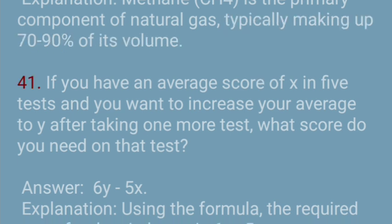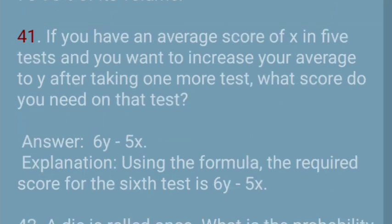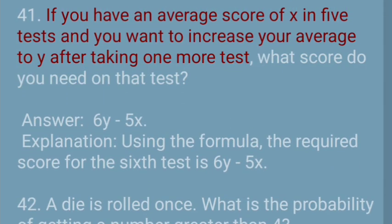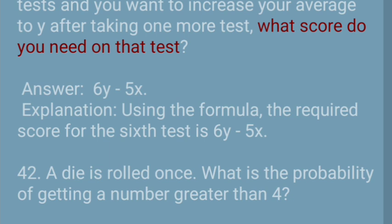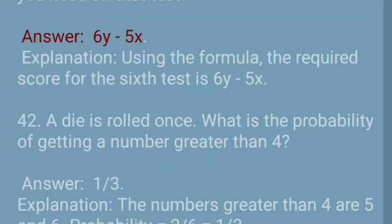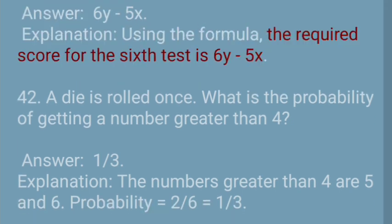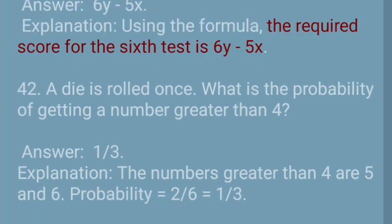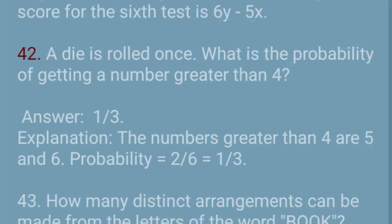Question 41: If you have an average score of X in 5 tests and you want to increase your average to Y after taking one more test, what score do you need on that test? Answer: 6Y − 5X. Explanation: Using the formula, the required score for the 6th test is 6Y − 5X.